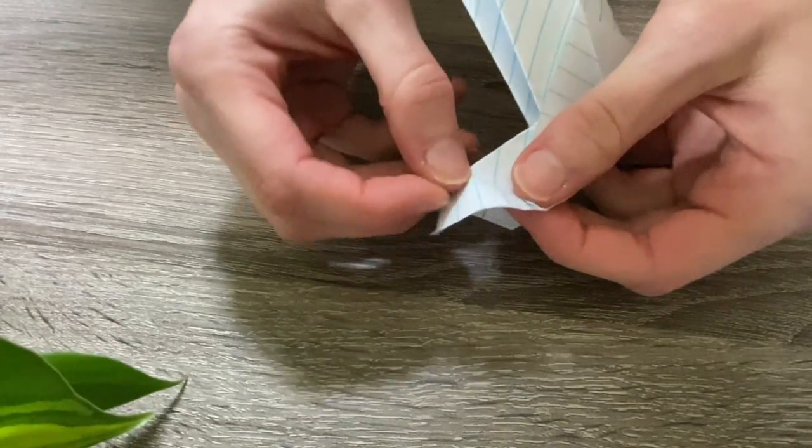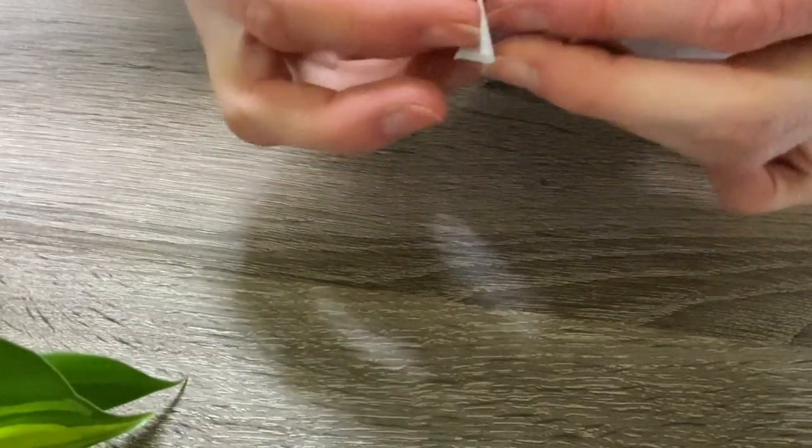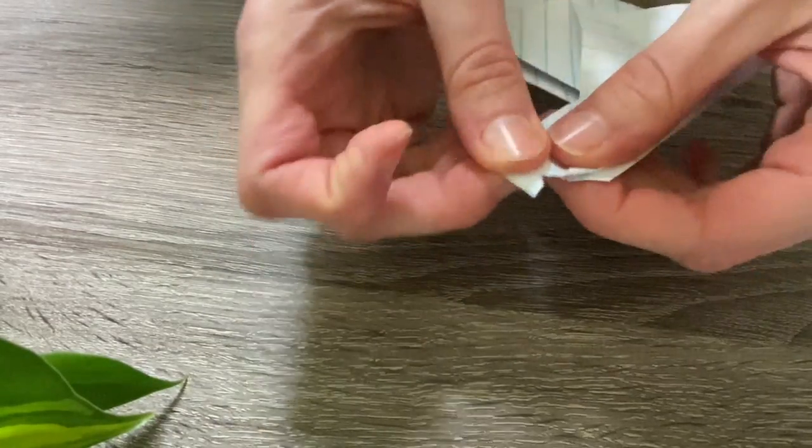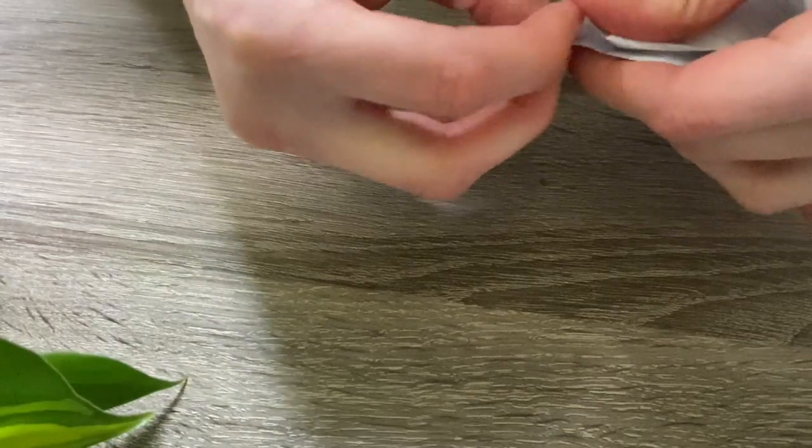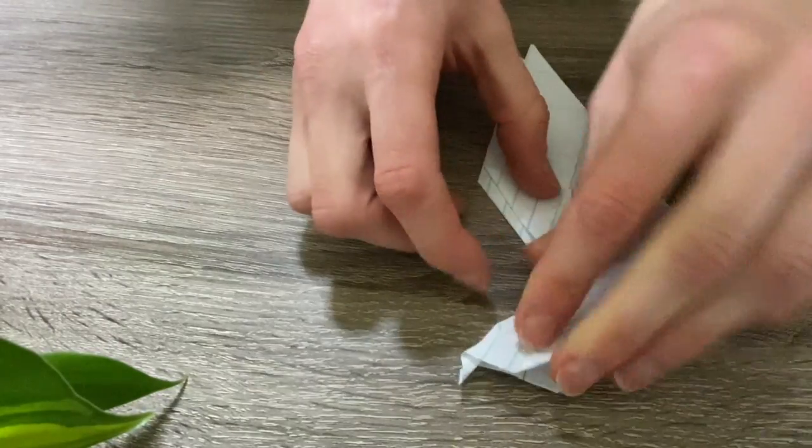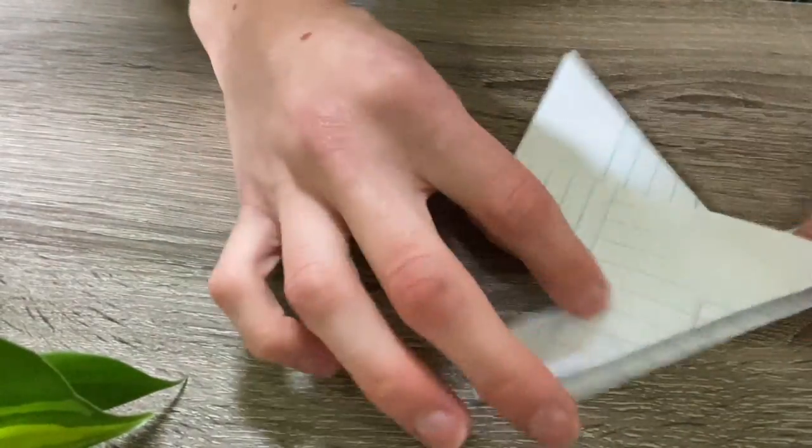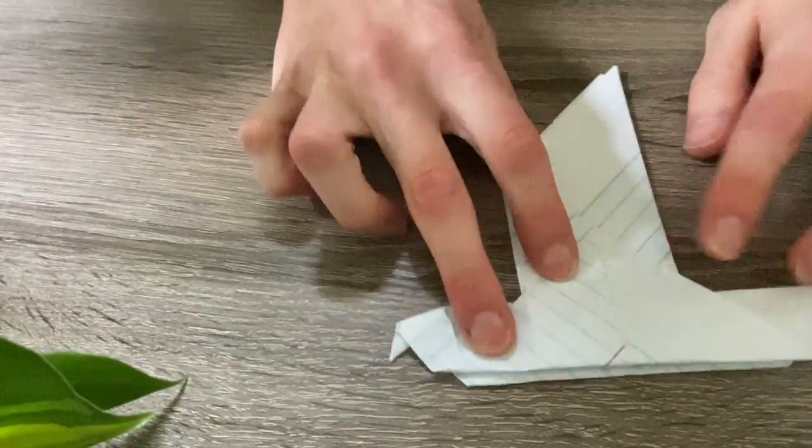You're just going to fold it in just a little bit to give our bird a beak like so. You can leave it like that so that your bird has outstretched wings like it's flying, or you can fold your wings down